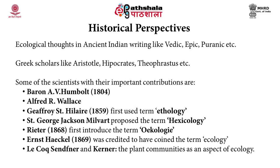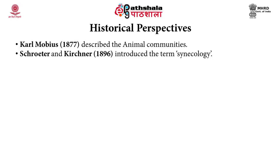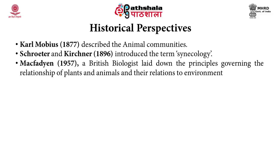L.C. Sanfner and Kerner introduced for the first time plant communities as an aspect of ecology. Karl Mobius in 1877 described animal communities. Scroeter and Kirchner in 1896 introduced the term synecology. Meфadyen in 1957, a British biologist, laid down the principles governing the relationship of plants and animals and their relations to environment. K. Frederick in 1958 defined ecology as: 'the science of living beings as members of the whole of nature.'